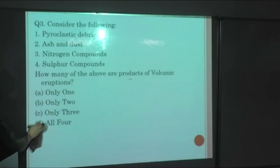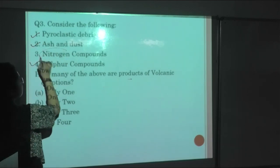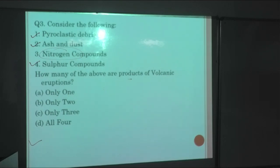Next question: Consider the following - pyroclastic materials, ash and dust, sulfur, nitrogen compounds. How many of these are the products of volcanic eruption? Very easy question. Pyroclastic flow, ash and dust is also there, sulfur is also there. But when we talk about nitrogen, it makes the situation confusing. But you know it has a correlation with the lightning. Your nitrogen compounds also are released. So option B is most acceptable, though option B and D are confusing. But we'll go for all four because it has a correlation with your lightning.